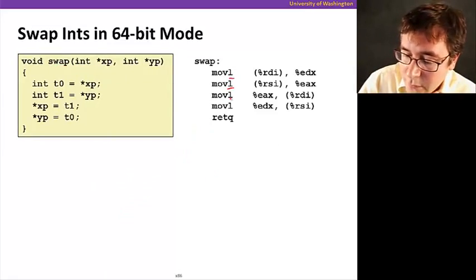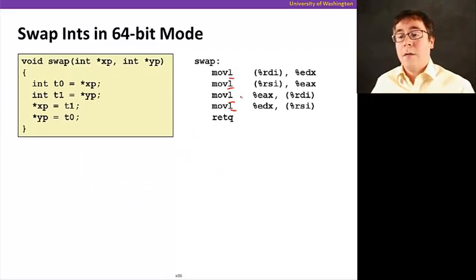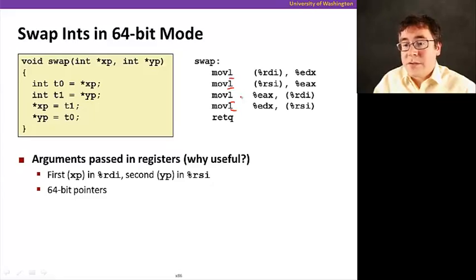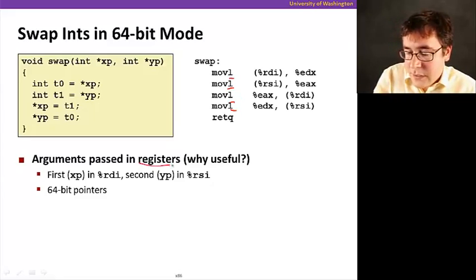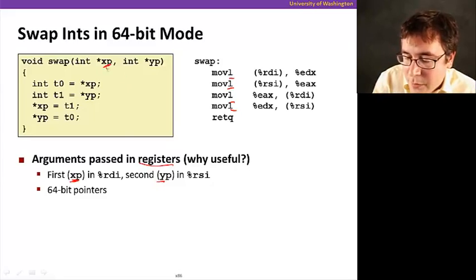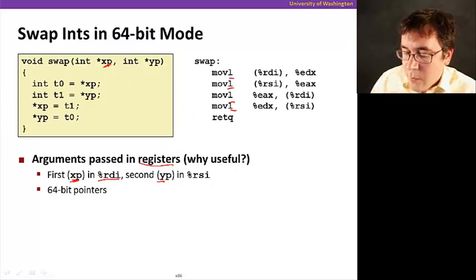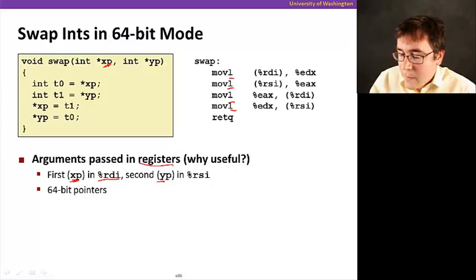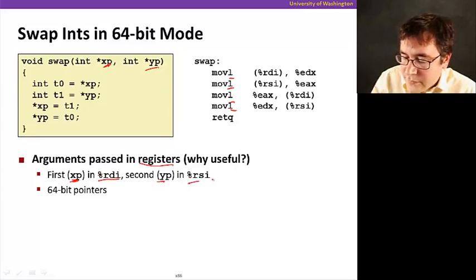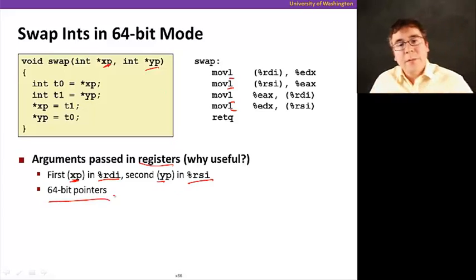But the first thing to note is what? We have moveL, four of them. And also, note that we are passing the parameters via registers, directly as opposed to the stack. So, Xp, the Xp parameter is stored in register RDI. And Yp is stored in register RSI. And these are 64 bit pointers, because addresses in X86-64 are 64 bits long. And look how interesting.